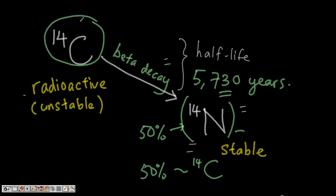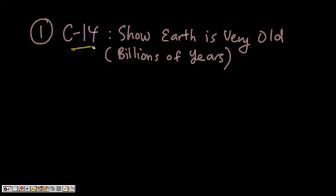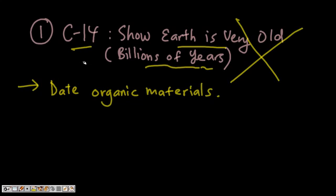There are two main misconceptions that we need to clarify concerning carbon-14 dating. The first misconception is this: carbon-14 dating shows that the Earth is very old—billions of years old. This is absolutely not true because carbon-14 is used only to date organic materials, that means once-living things. It cannot be used to date rocks, only organic materials.